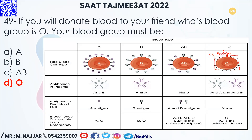Because it has no antigens, blood group O can donate to all other blood groups — to AB, to B, and to O. However, blood group O has both antibody A and antibody B in its plasma.